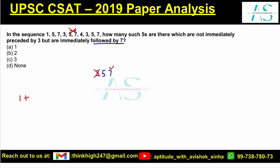Now again if we look at this 5, we have a 7 here but we have a 3 here — 3 should not be present. So we are talking about just one 5 which is following this condition. Option A seems to be the correct answer.